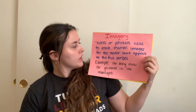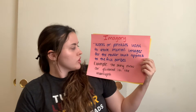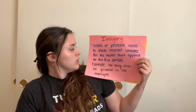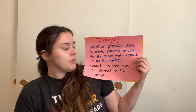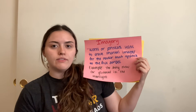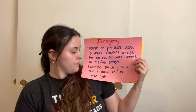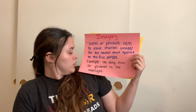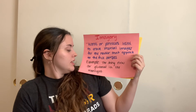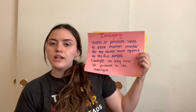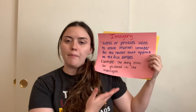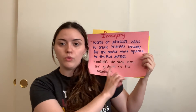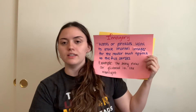Up next we have imagery. These are words or phrases used to create mental images for the reader that appeal to the five senses. The example I have for you today is the shiny new car glistened in the moonlight — this creates a picture of that brand new car in the night sky for the reader.